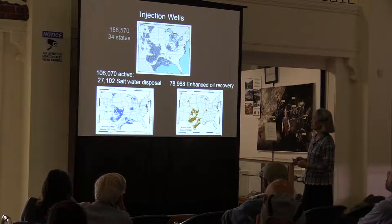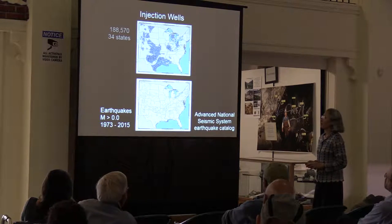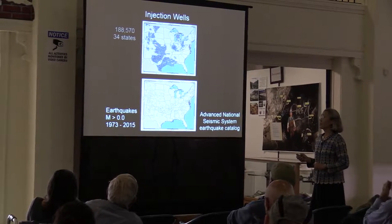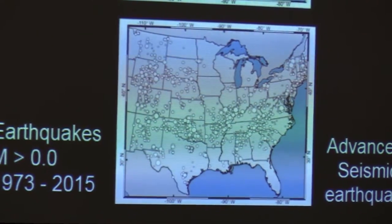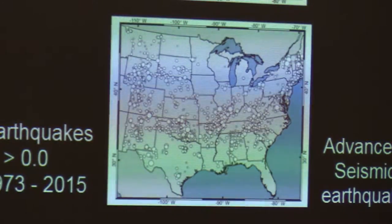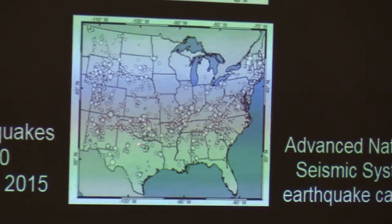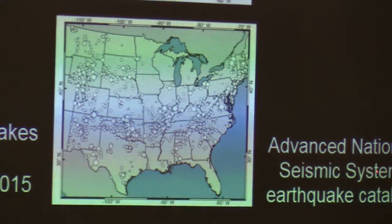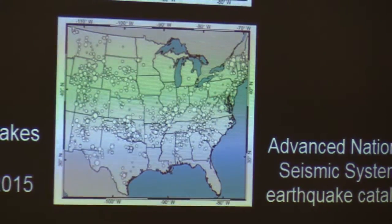The other approximately 79,000 wells are for enhanced oil recovery. These are maps showing the two types of well distribution. We also looked at the seismicity data over the time period of 1973 to 2015. The injection well data goes back a little further, but before 1973 the number of large or active wells was not too many. White dots on this map show earthquake locations — all earthquakes with magnitude greater than zero from the National Seismic System Earthquake Catalog, with different sizes representing magnitude.